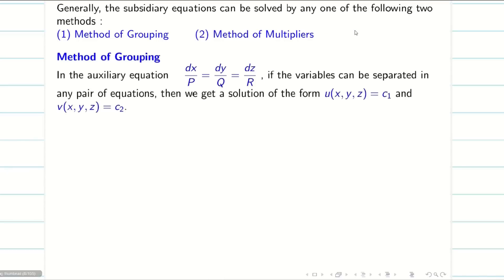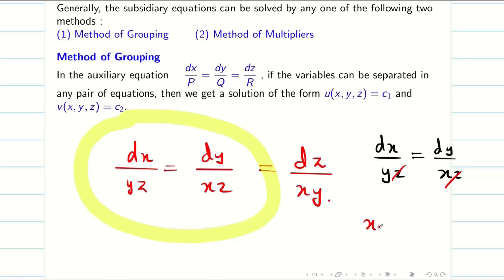A quick recap of method of grouping. Suppose you are getting dx/yz = dy/xz = dz/xy. When we simplify dx/yz = dy/xz, I can cancel z and write x dx = y dy. I can group x and y. If it is possible, then I can use the method of grouping.